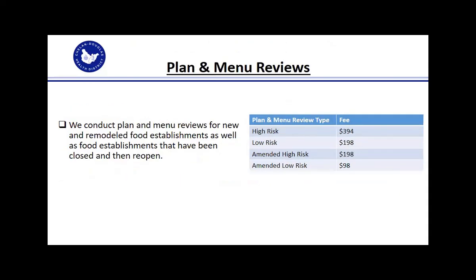Another thing we do in the food safety program is plan and menu reviews. We require all new food establishments, places that go through remodels, and food establishments that have been closed for a while and reopen to go through a plan and menu review. Based on risk, you can see the fee in that table. We also do what we call an amended plan and menu review — for an establishment that's already in existence and permitted, if they go through a remodel or expand their menu, they have to go through that application process with us.